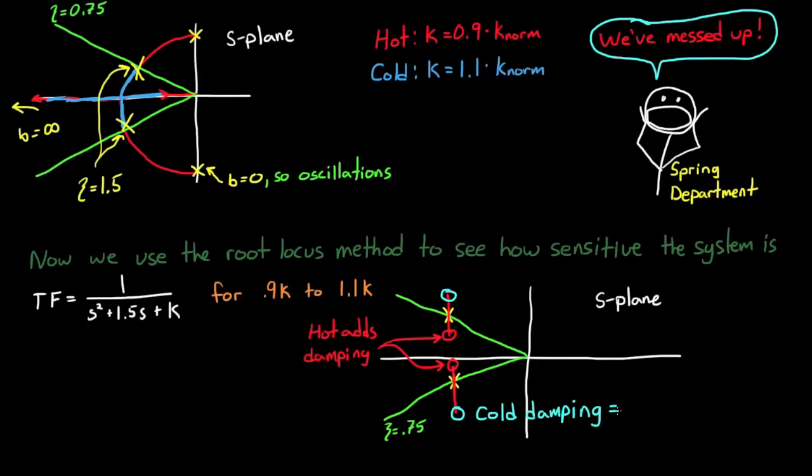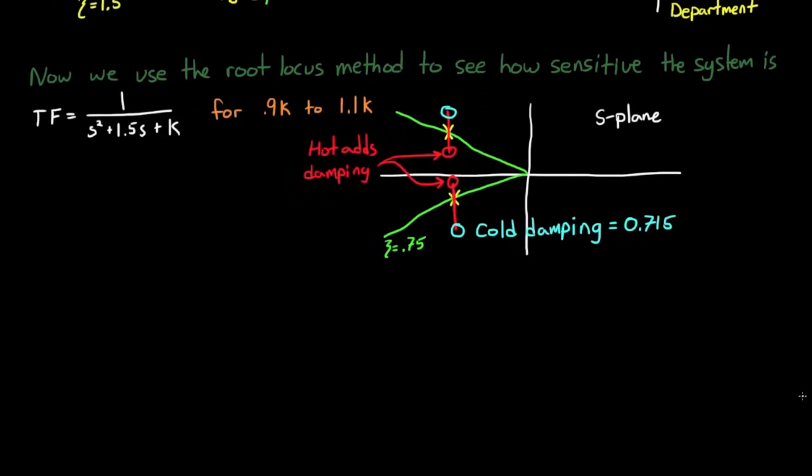These yellow x's are our ideal spring constant at 1 and these red lines that I'm drawing is the root locus where it goes from the hot value of 0.9k to the cold value of 1.1k. And you see that when the springs are hot we still meet our requirement. However when they're cold the damping ratio goes down to 0.715 which doesn't meet our requirement. And now your team has a decision to make.